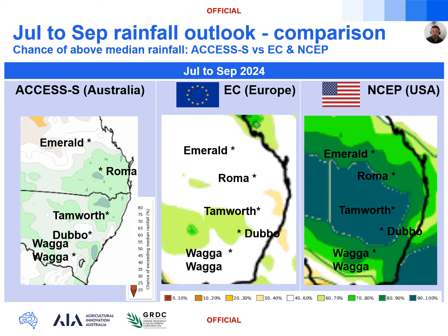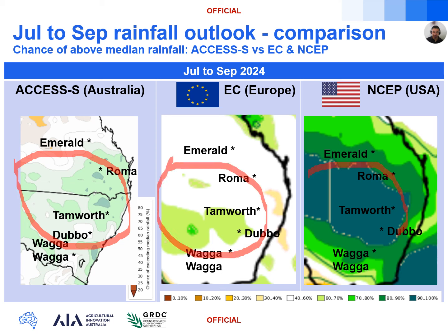If we extend the outlook now all the way to September, we do see that the Access has now come into alignment with the EC and the American models, and all three models do indicate above a 60% chance of exceeding median rainfall over those three months. La Niña has the strongest influence on rainfall across eastern Australia over the winter and spring period, and this is very much being reflected across the three maps. Another watch point would be just how much moisture moves down from WA across central Australia and into inland parts of New South Wales and southern Queensland. At this stage, we are seeing consistency across the three models, giving us confidence that we are expecting to see above median rainfall for these three months.